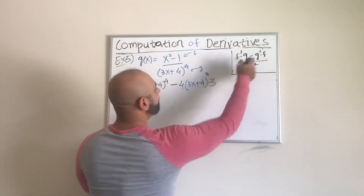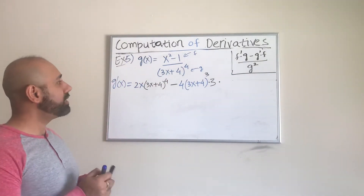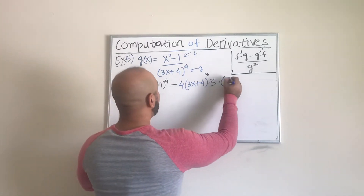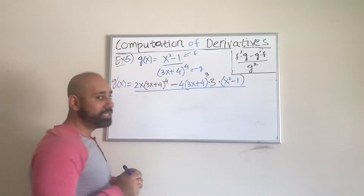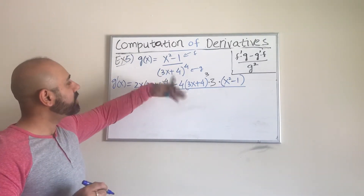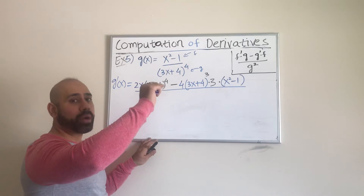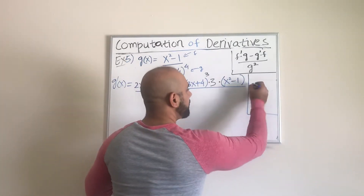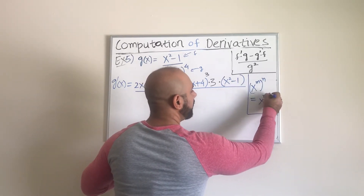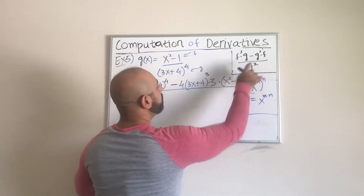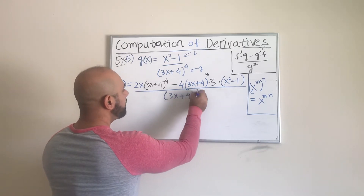We multiply by that, and don't forget you still have to multiply by the f function itself — you don't take its derivative, you just multiply by it, writing it in parentheses as the binomial (x² − 1). This whole numerator expression has to be divided by g squared. When we square (3x + 4)⁴, using the rule x^m raised to the power n means we multiply the exponents: 4 times 2 gives 8. So the denominator is simply (3x + 4) raised to the power 8.